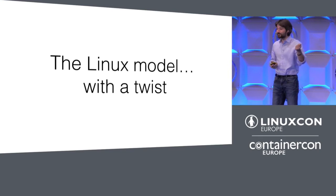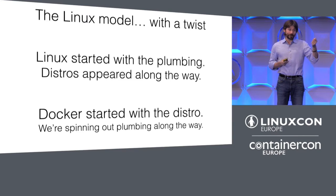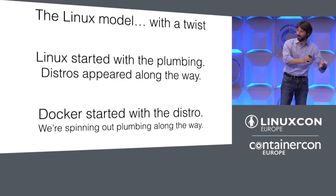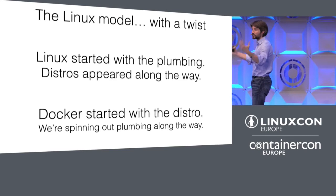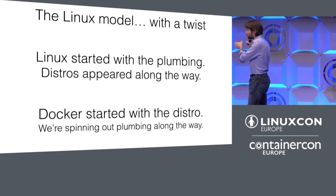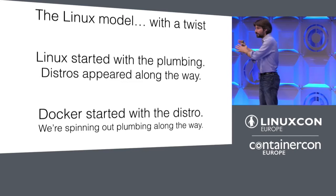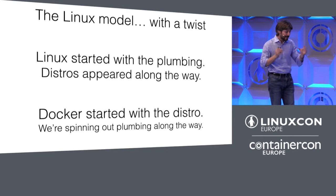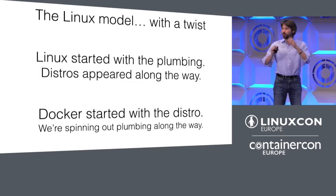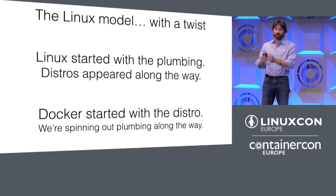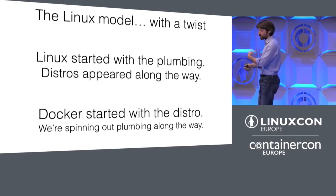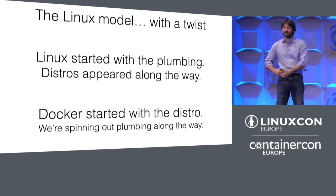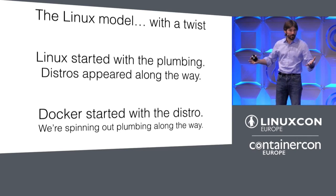There's one primary change we made, and the resulting model is what we call the Linux model with a twist. Linux really started with the plumbing — the kernel is a core component, and as the plumbing improved, different finished products emerged over time to serve different kinds of users. With Docker, we did it exactly the other way around. We started with the finished product. The goal of Docker is to solve problems for users, and then along the way we take opportunities to extract open source components and open them up.